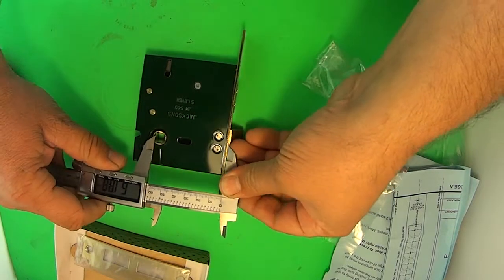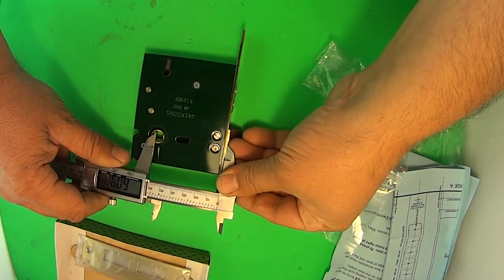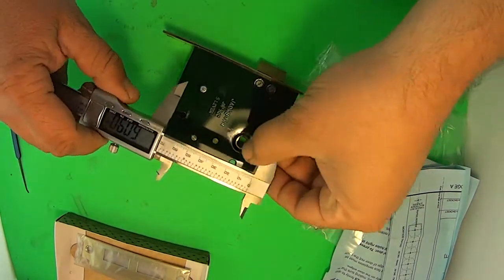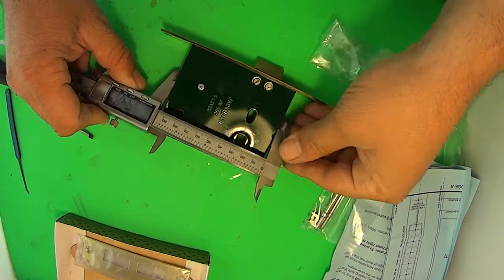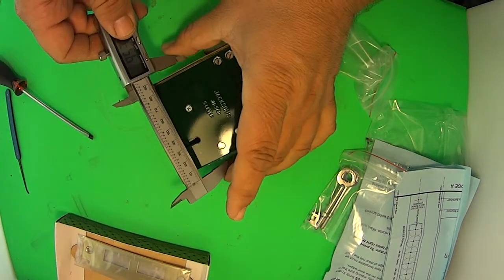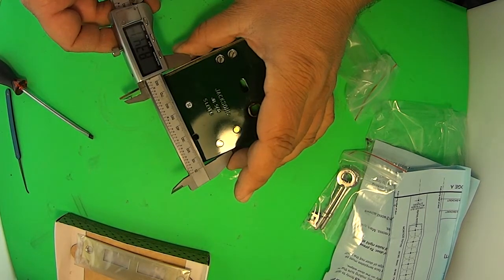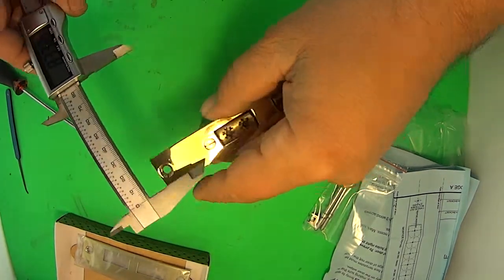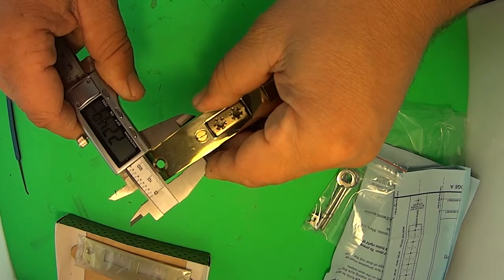So the backset here should be exactly from the centre. It should be about 60mm, which is correct. The height of this lock body is 95mm. From back to the front of the lock, we're looking about 83mm. The width, 22.5mm.